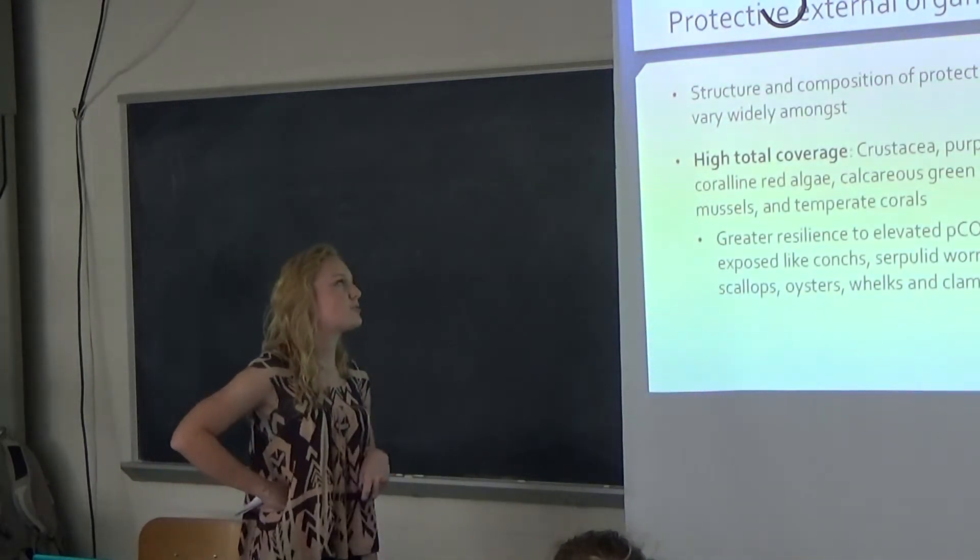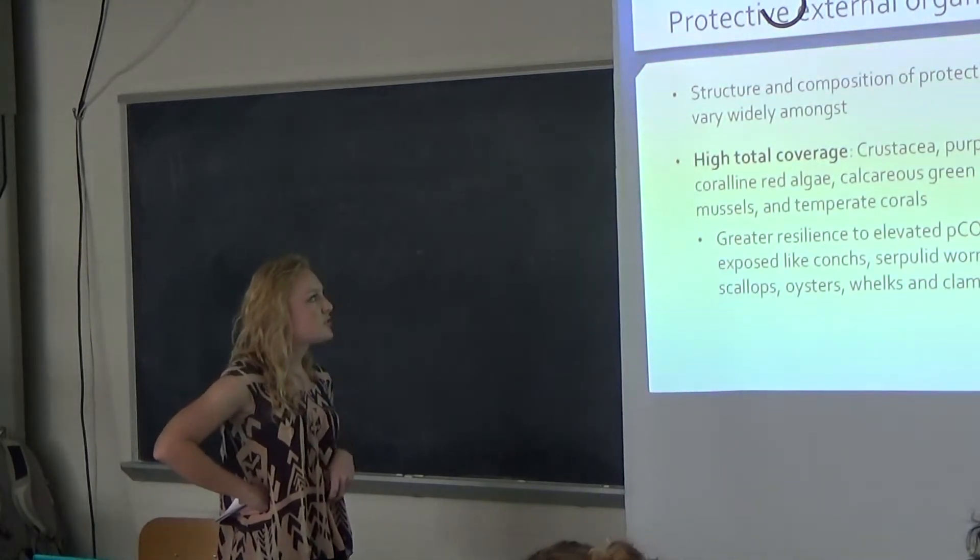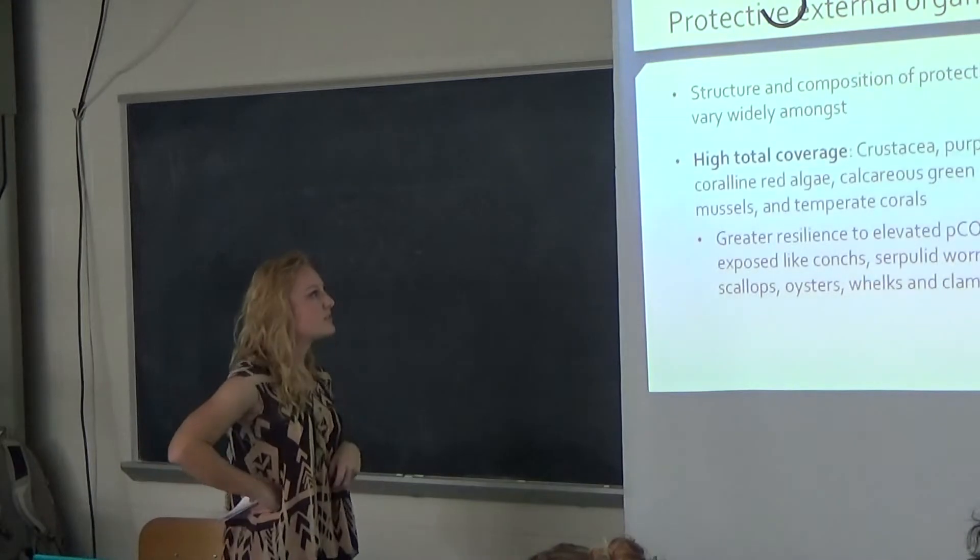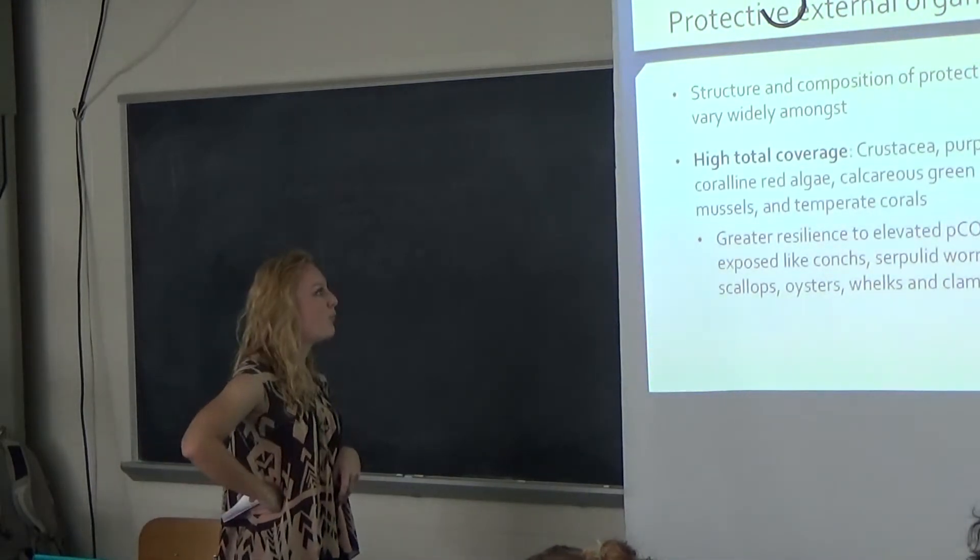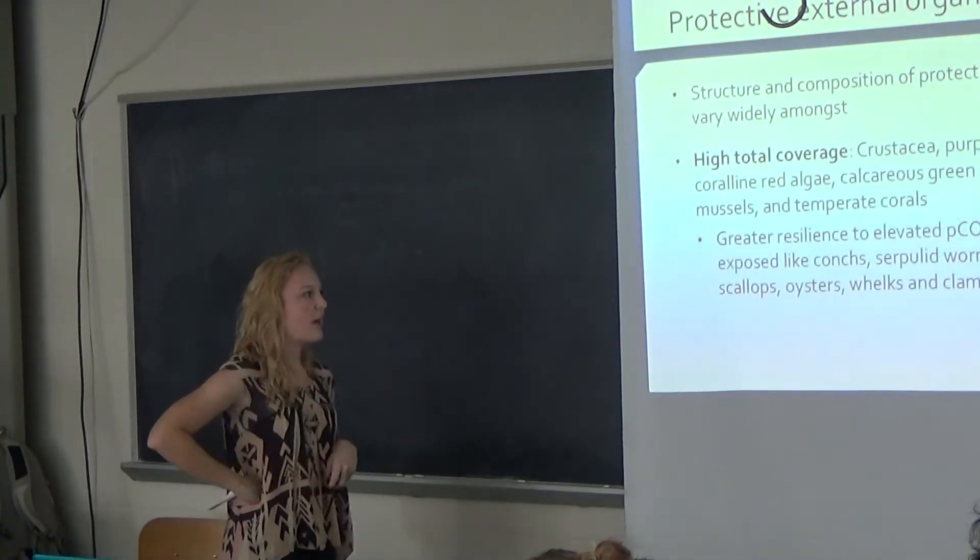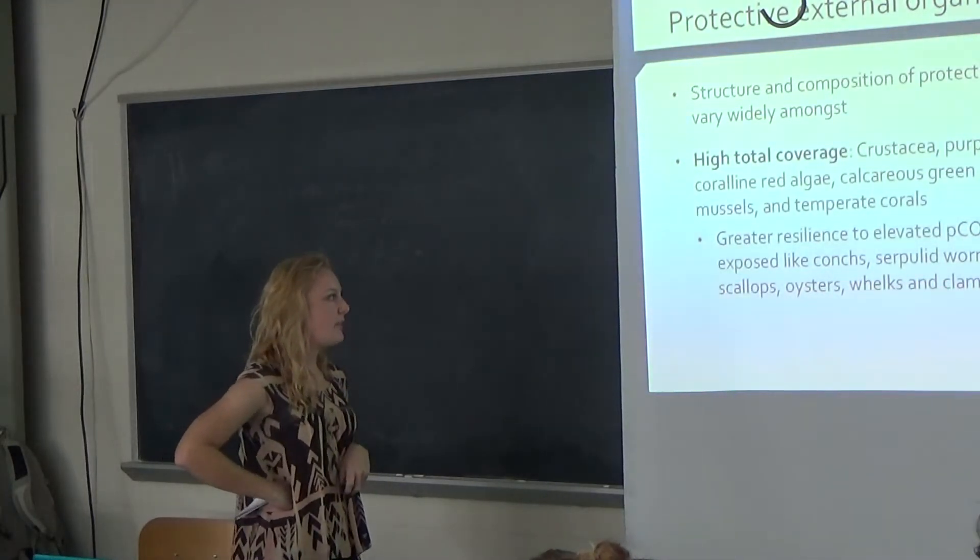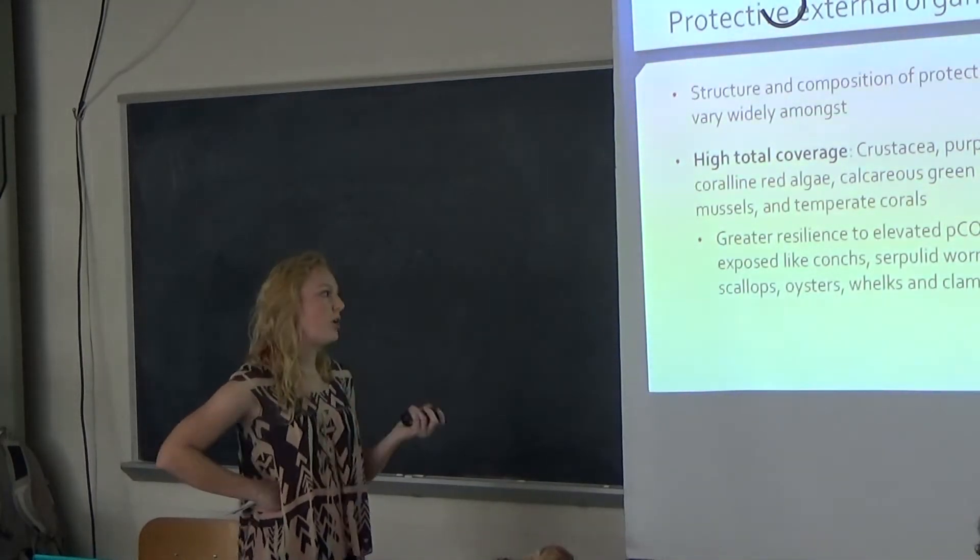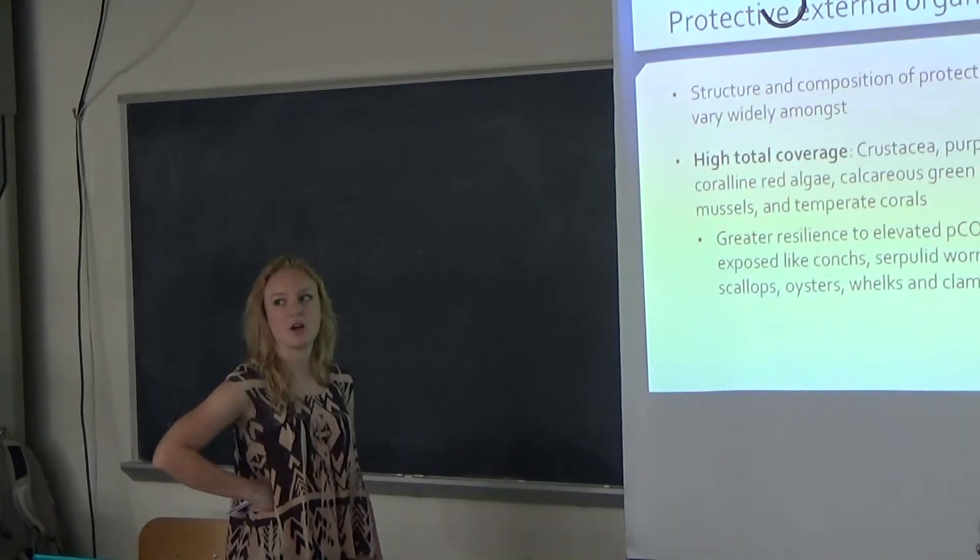For the protective external organic layer, this is just the structure and composition of the layers found within the organisms. What we found in the paper is that when there's a high total coverage of it, there's a greater resilience to the elevated pCO2 levels than those that are more exposed, like clams, worms, or oysters, which don't have a very high coverage of organic material.